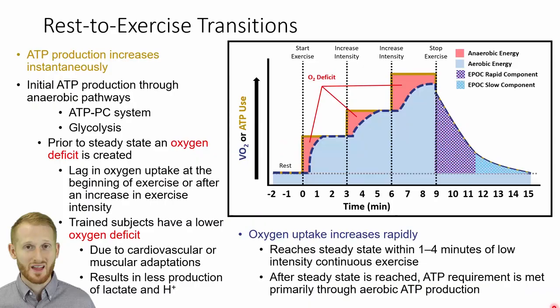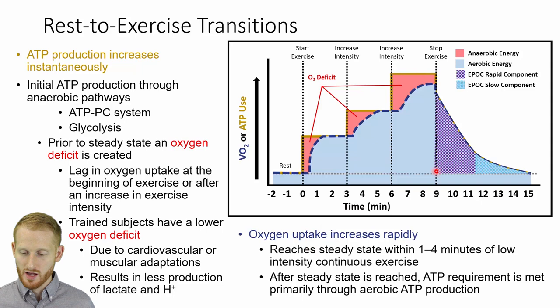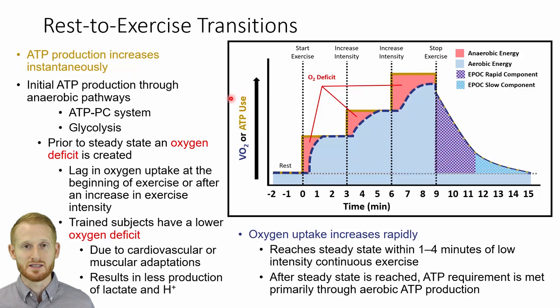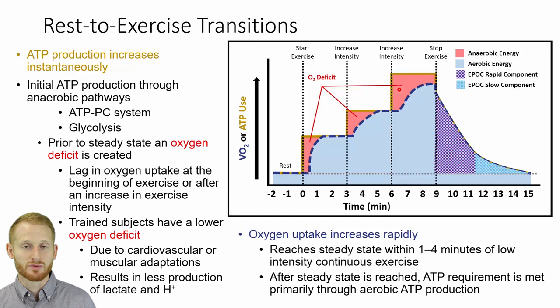Now that we've talked about energy at rest — almost all aerobic — let's talk about the transition from rest to exercise. Looking at this graph, on the x-axis we have time, starting negative, with the zero line representing when we start exercise. On the y-axis we have two things: VO2, which is oxygen consumption needed to produce energy aerobically, and ATP use or energy use. The light blue color represents aerobic metabolism, and the light red represents anaerobic metabolism — energy produced without oxygen. At rest, these first couple of minutes show energy almost entirely supported by aerobic metabolism.